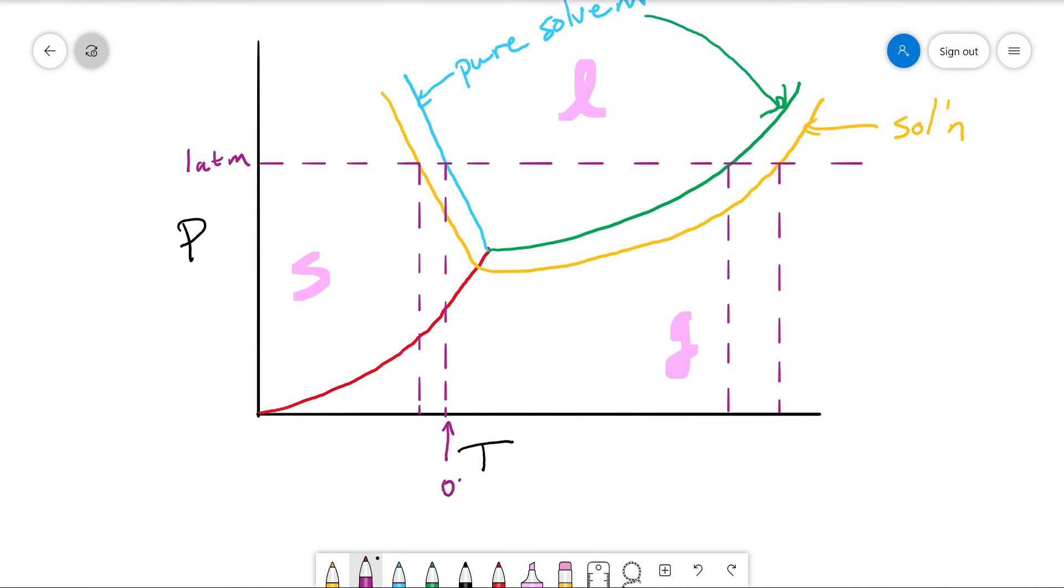So here we have our normal boiling point. That would be zero degrees, I'm sorry, normal freezing point. If this were water, this would be 100 degrees here, that's our normal boiling point. But we have this elevated temperature here that's the BP of the solution, so you can see it's higher.